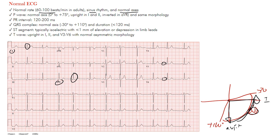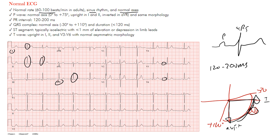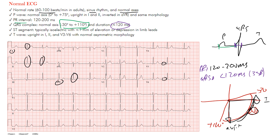I just want to touch on what is a normal ECG. Normal axis here — it's upright in lead two as well. Notice that you have normal PR intervals: the normal PR interval is between 120 and 200 milliseconds, and that's certainly normal here. The PR interval goes from the beginning of the P wave up until the QRS complex. The QRS complex axis we said is within the normal range, and the duration of the QRS complex is less than 120 milliseconds. Remember, 120 milliseconds is three of the small boxes.